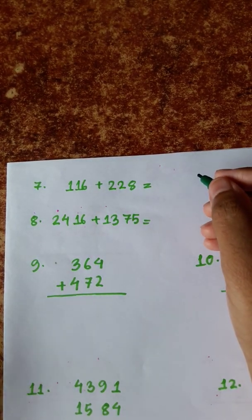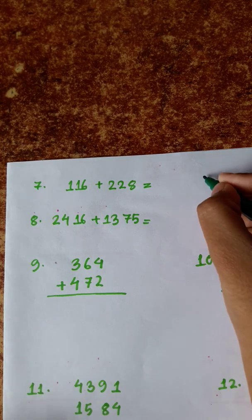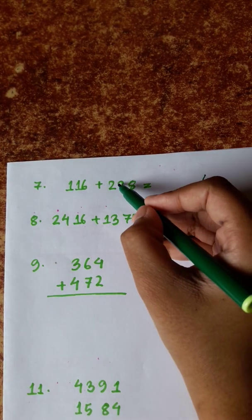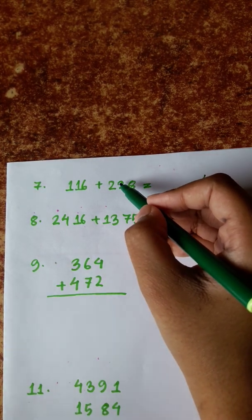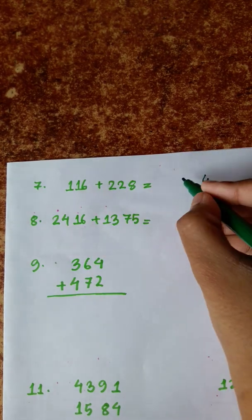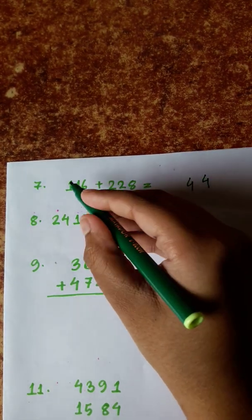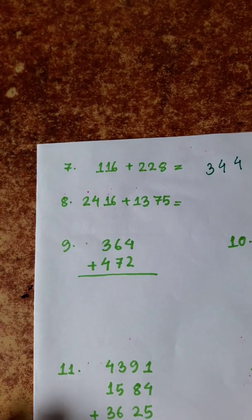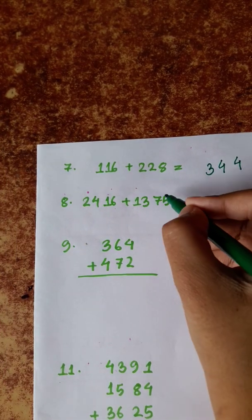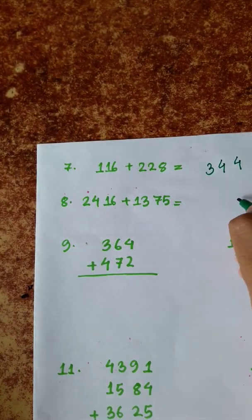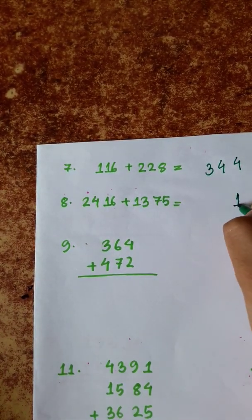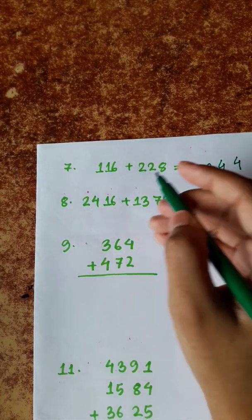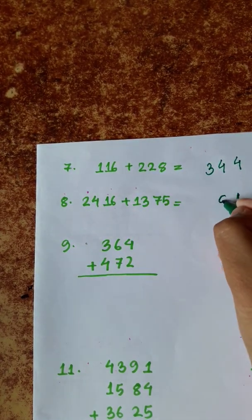Counting: 8, 9, 10, 11, 12, 13, 14. Then 1, 2, and 1 is 3, plus 1 is 4. Then 2 plus 1 is 3. Then 5 plus 6 is 11, carrying 1. Then 7 and 1 is 8, plus 1 is 9.